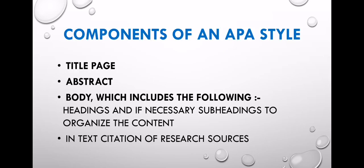Components of APA style include: a title page, an abstract, and then the body, which includes headings and if necessary subheadings to organize the content, along with in-text citation of research sources.